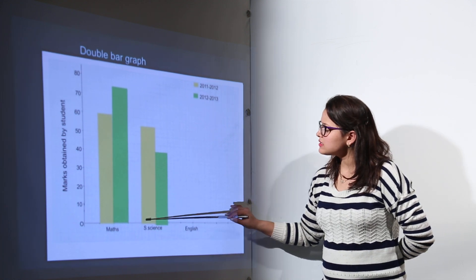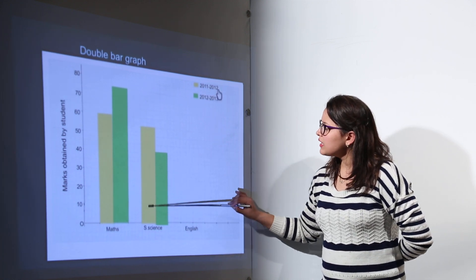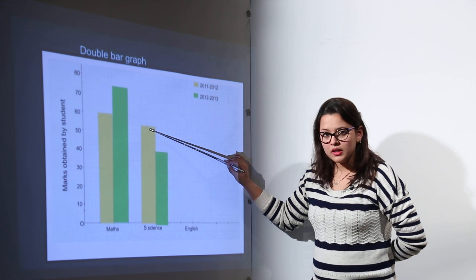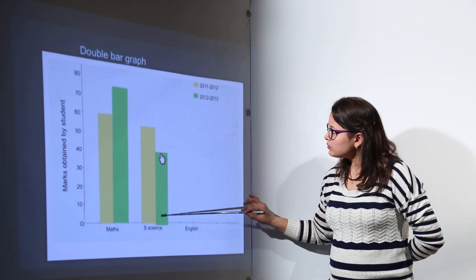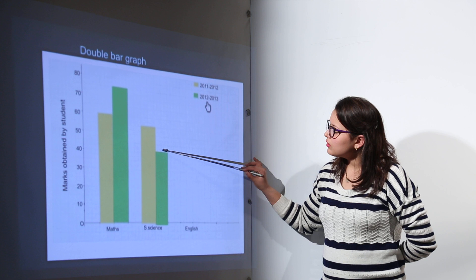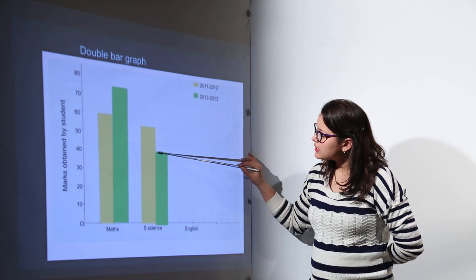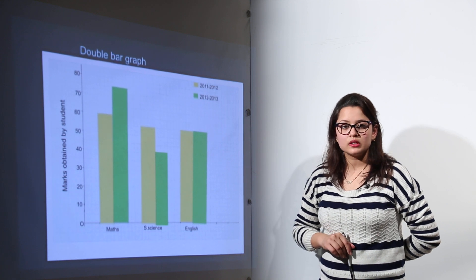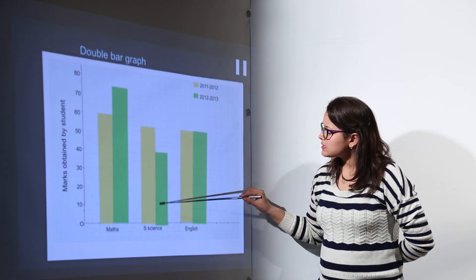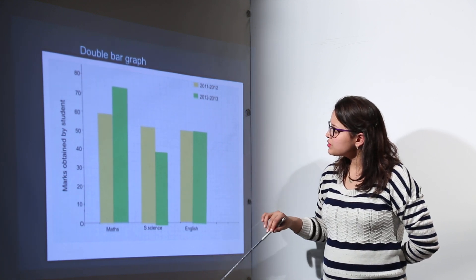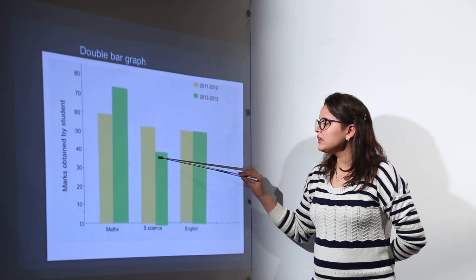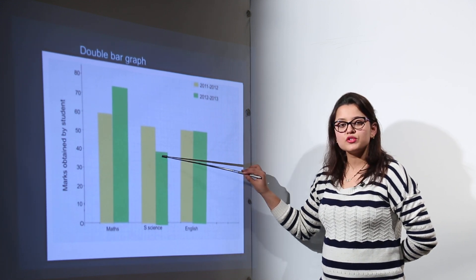Similarly in the next subject that is social science we have the data for 2011-12 year and we have the data for 2012 and 13 year. Now we can clearly compare that in 2012 and 13 the student has got weak in the class of social science. The subject has been reduced so we can clearly identify the performance of the student in this.